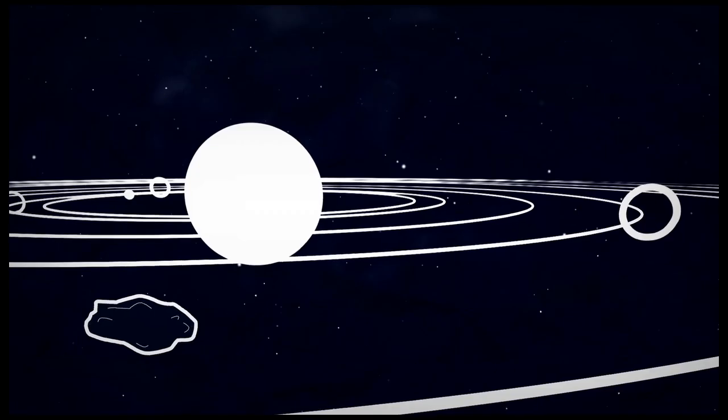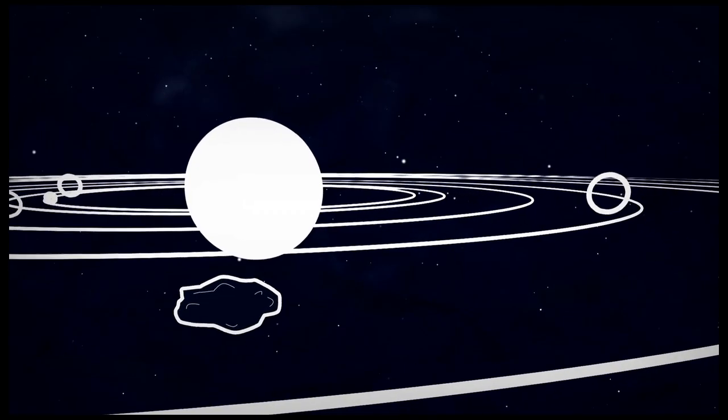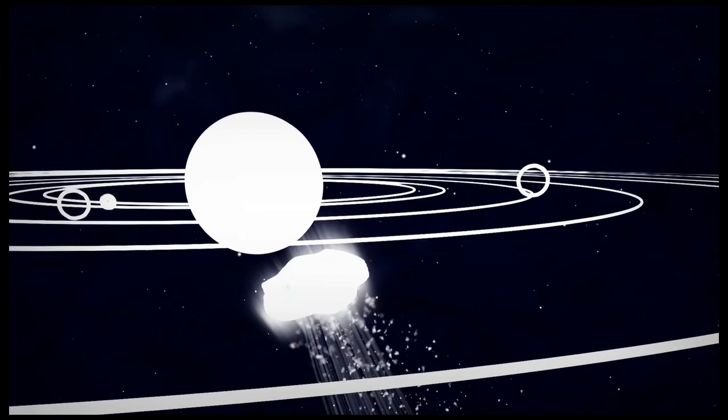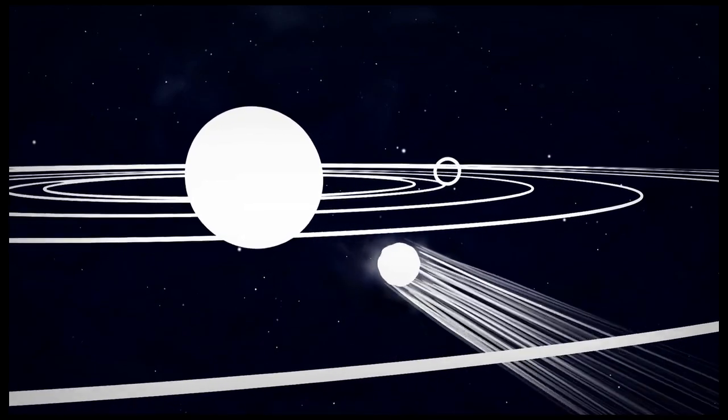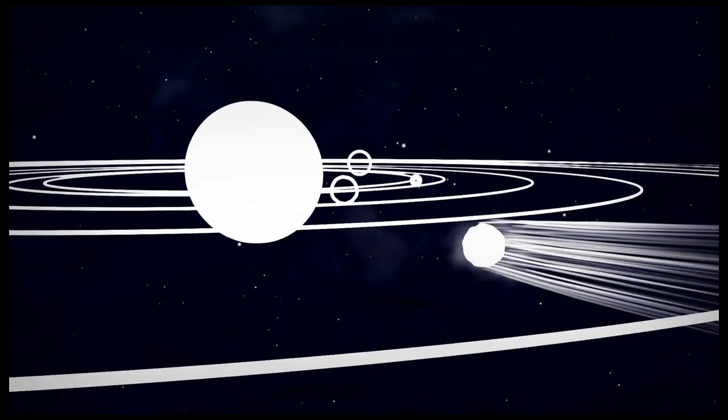Comets jet in from the outer reaches of the solar system. When the comet comes close to the sun, it heats up. It's subjected to solar wind. They have these enormous tails stretching across the sky.